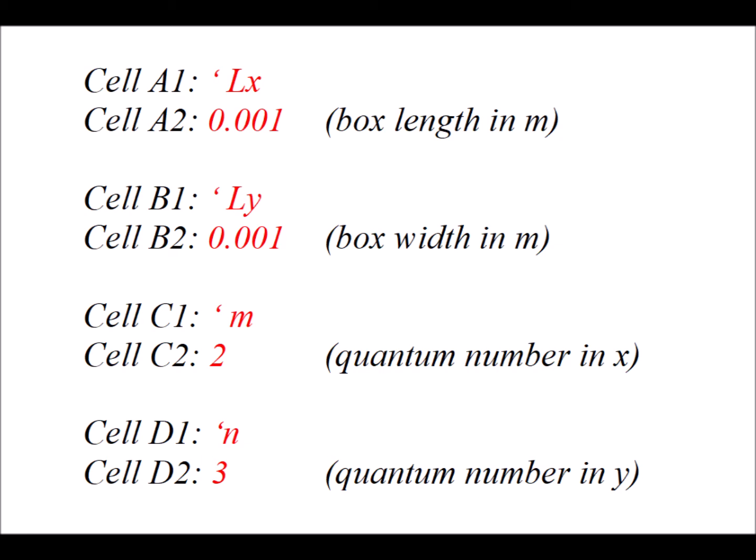In cell D1, we type apostrophe N, the N quantum number. In cell D2, for example, here we're typing in the number 3.